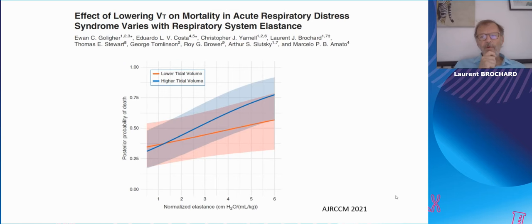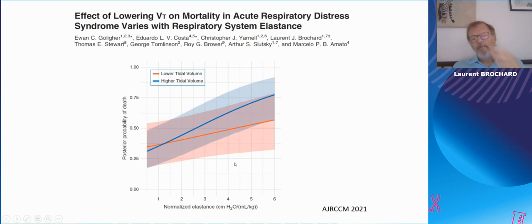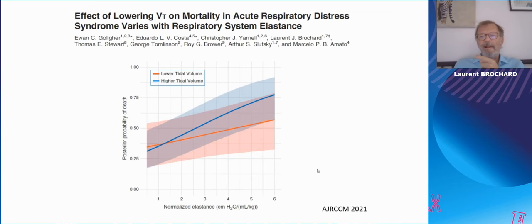However, Juan Galliger looked back with Marcelo Amato and others in Toronto at different databases from randomized trials testing low versus high tidal volume. The question was whether the effect of decreasing tidal volume is dependent on the baseline value of elastance — or compliance, if you prefer. This graph shows the posterior probability of dying when using low versus high tidal volume. Clearly the two curves diverge: the higher the elastance, the higher the benefit of low tidal volume. But in the opposite direction, the lower the elastance or higher the compliance, the less benefit you can expect from low tidal volume.